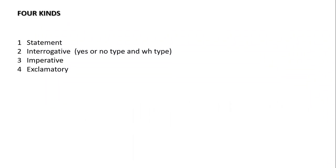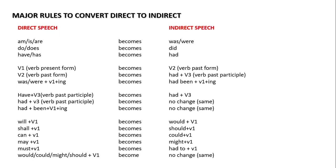In reported speech, we generally see four kinds of sentences in direct speech: one is statement; another is interrogative, meaning questioning — yes or no type questions and WH-type questions; imperative — orders, requests, commands; and exclamatory — sudden feelings such as thought, sadness, joy, whatever it may be.